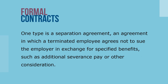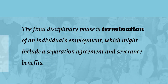In some termination situations, formal contracts may be used. One type is a separation agreement, in which a terminated employee agrees not to sue the employer in exchange for specified benefits, such as additional severance pay or other considerations. The final disciplinary phase is termination of an individual's employment, which might include a separation agreement and severance benefits.